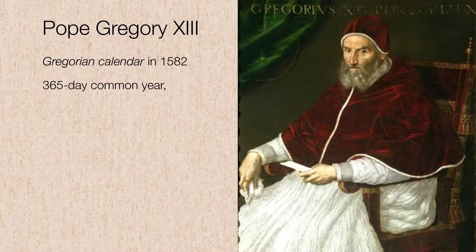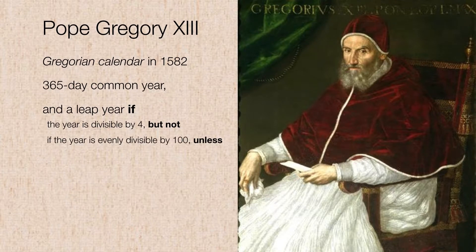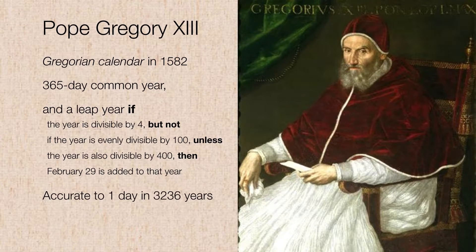It includes a 365-day common year, and a leap year is defined if the year is divisible by 4. But it is not a leap year if the year is evenly divisible by 100, unless the year is also divisible by 400 — and then a 29th day of February is added to that year. It's a little bit clunky, but it works. And it turns out the Gregorian calendar is accurate to one day every 3,236 years, which is really not bad.